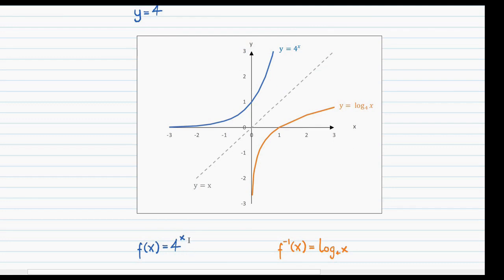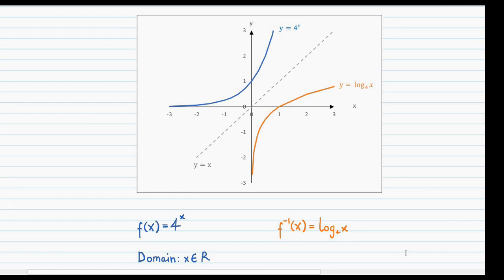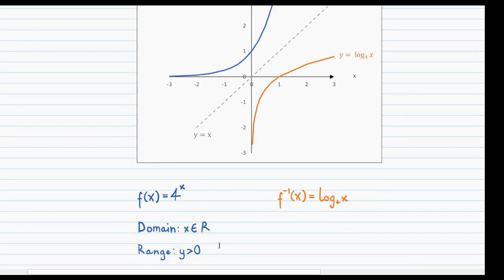The function 4 to the power of x can take any x value, so its domain is all real numbers. But its range is restricted to only positive values, because a positive number to the power of anything always gives a positive number — meaning a range of y greater than 0. For the inverse function, its domain is restricted to only positive values of x, because you can't take the log of a negative number or even zero, so its domain is x greater than 0. But its range can be any value, whether positive or negative, meaning its range is all real numbers.